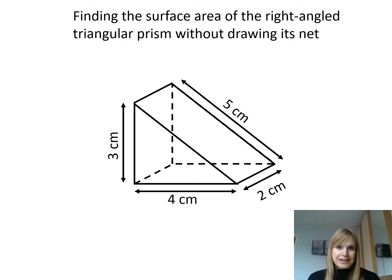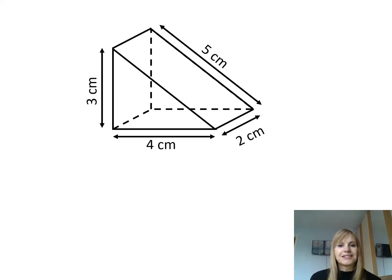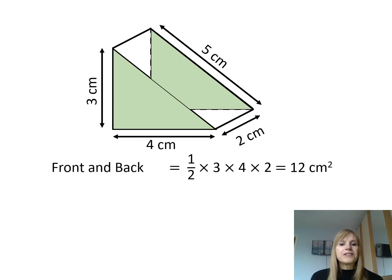So by thinking about what shapes make up our prism we can actually find the surface area without having to draw a net. I can see on this one I have a front and a back made up of two triangles. The height of my first triangle is 3 centimeters, the base is 4, so half times 3 times 4, and the back is also going to be half times 3 times 4. Now be careful you don't use that 5 centimeters. Remember when you're finding areas we don't use those sloping sides, so front and back are half times 3 times 4, and because there are two sides I'm just going to multiply that by 2 to give an answer of 12 centimeters squared.